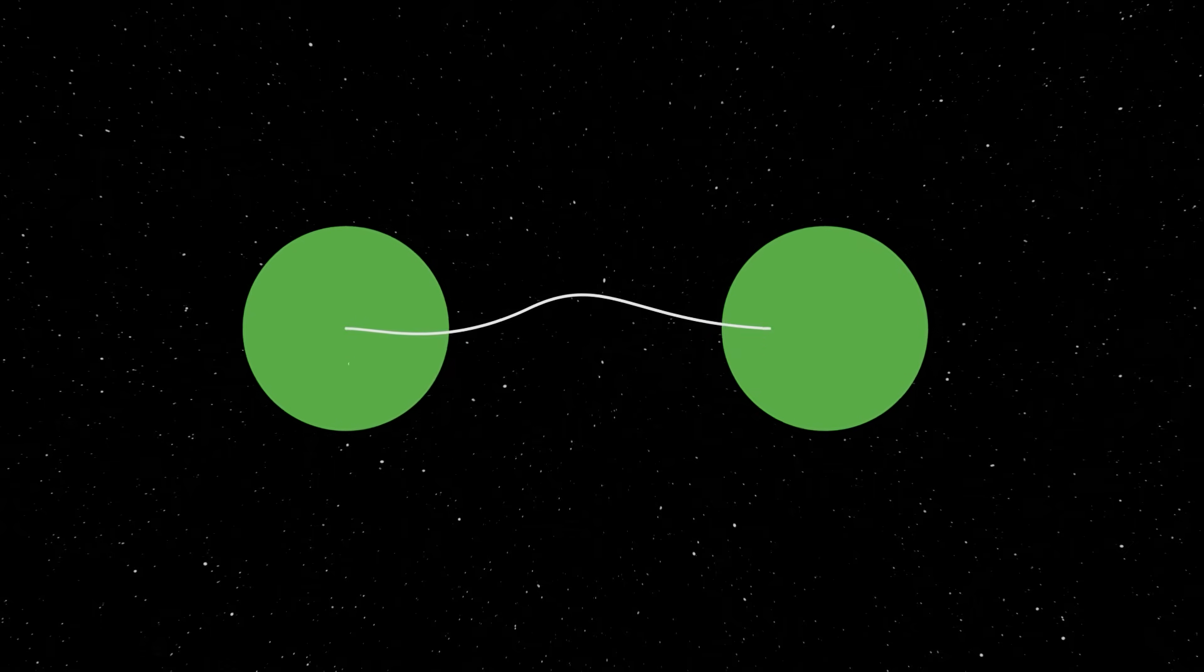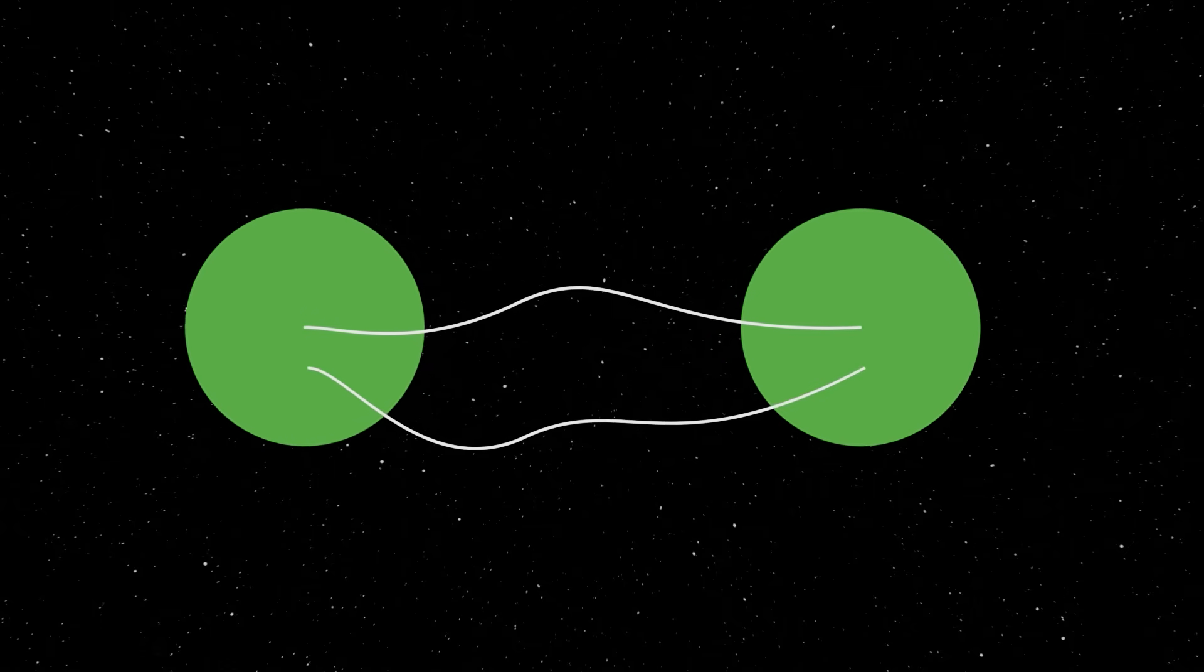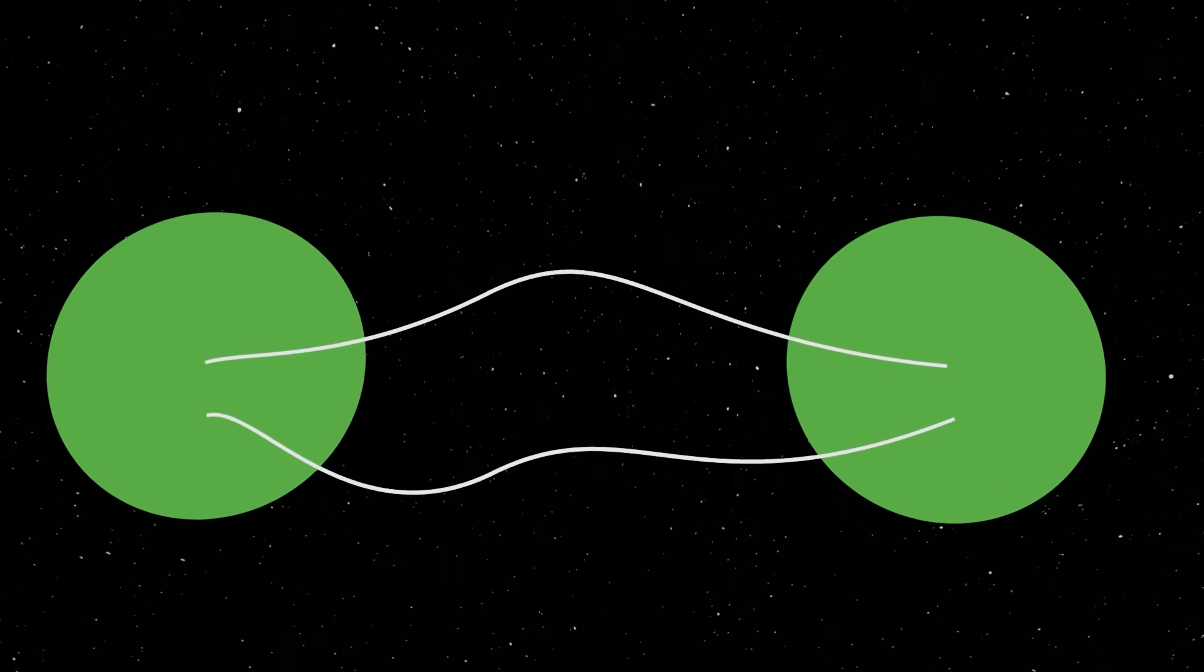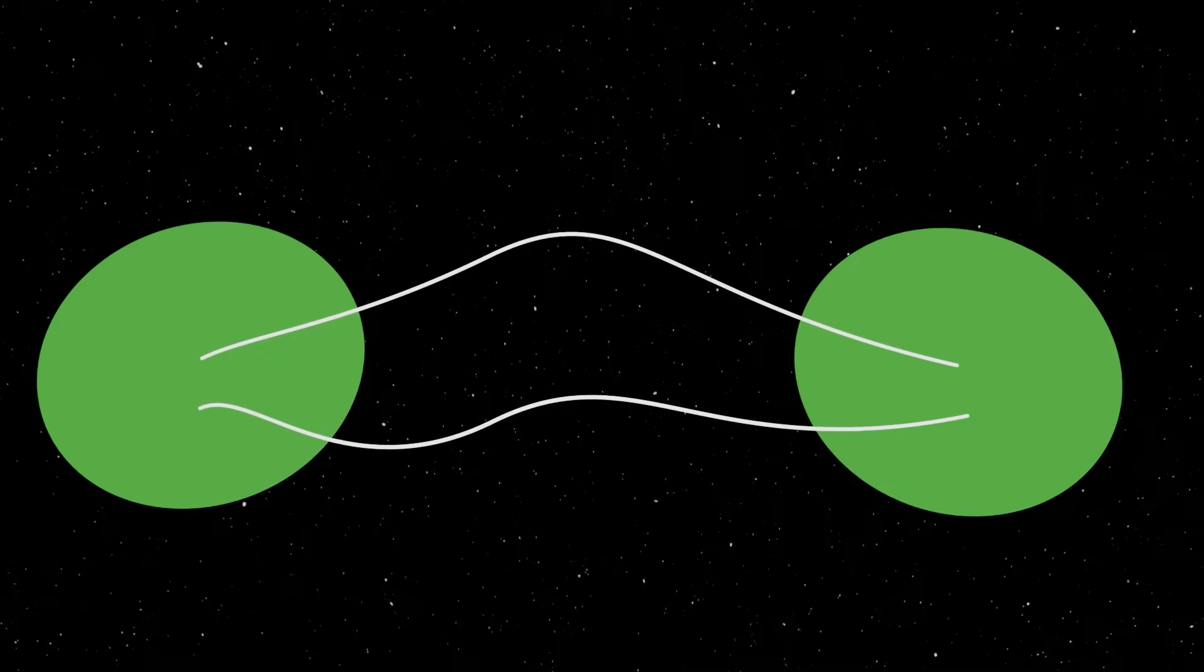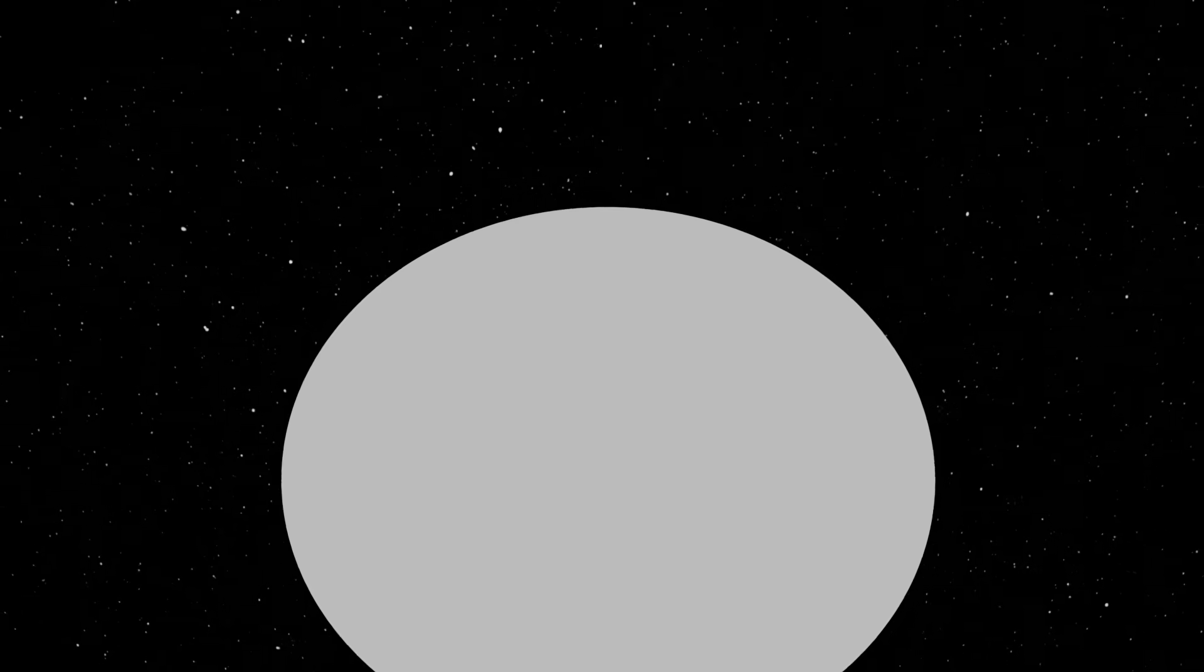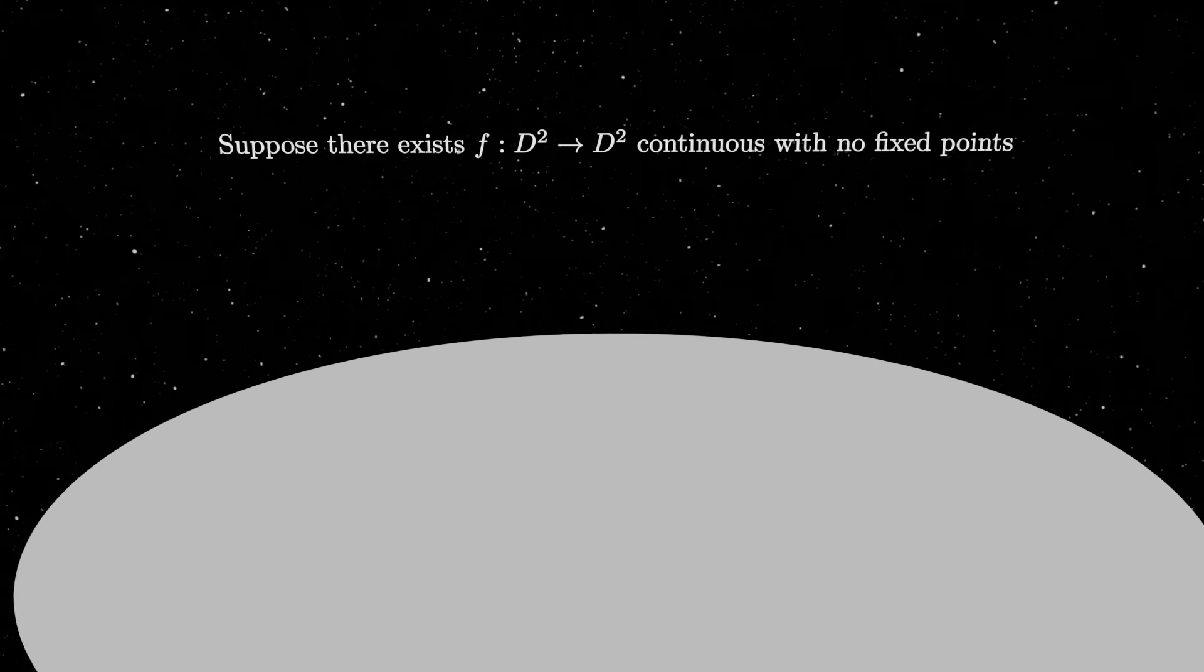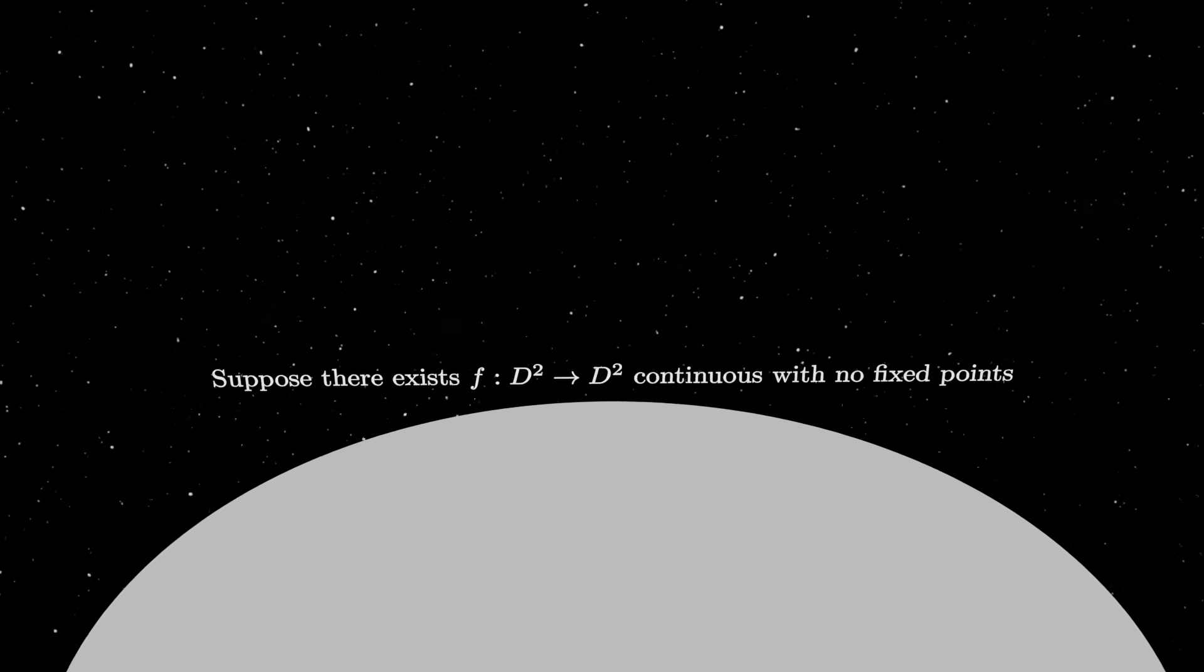Now, the power of the fundamental group is that it allows us to give a relatively simple proof as to why there is always a fixed point in any continuous mapping between field circles. We do this by contradiction. Suppose there is a continuous map, f, from a field circle onto itself, which has no fixed points.